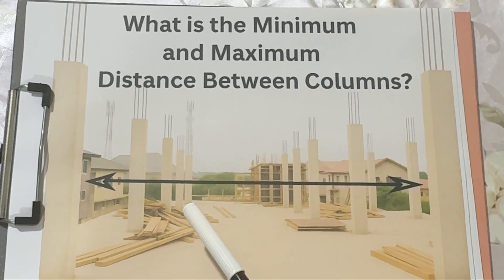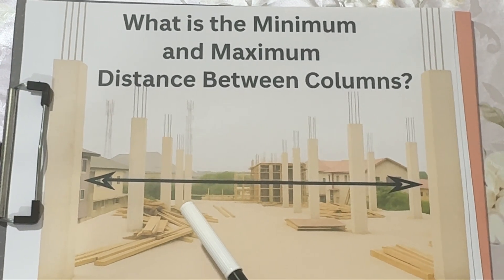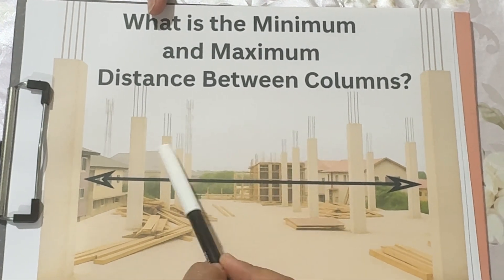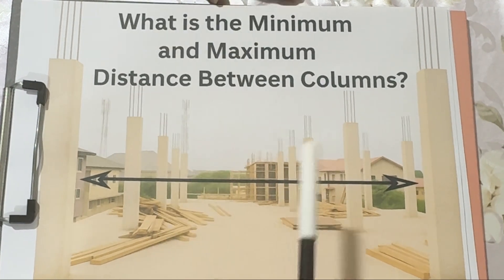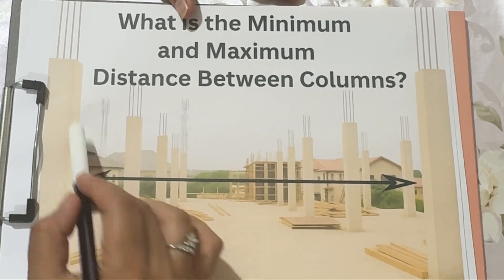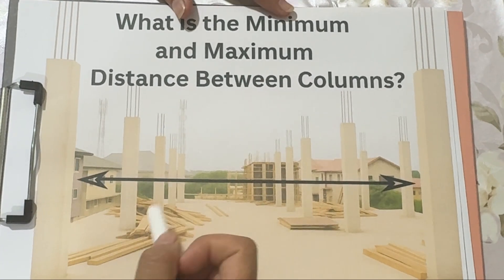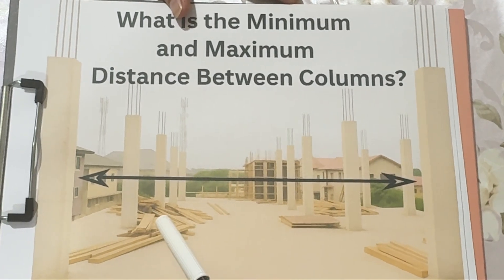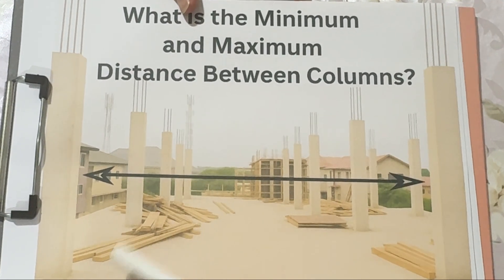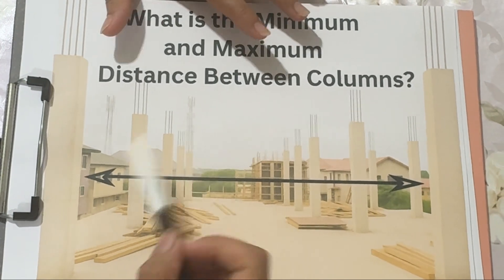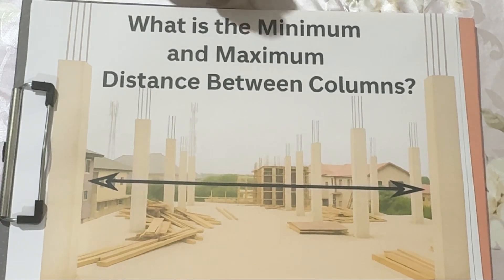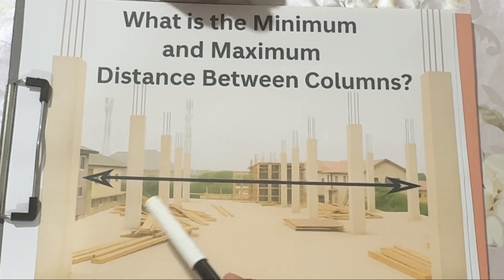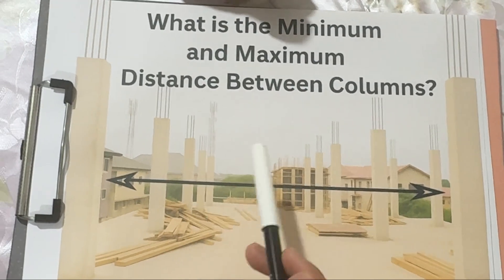Part 2: Factors that decide column spacing. How do we decide how far apart columns should be? There's no single magic number, but there are several factors that affect it. Number one: load on the structure. The heavier the load — like in a high-rise building or bridge — the closer the columns need to be.